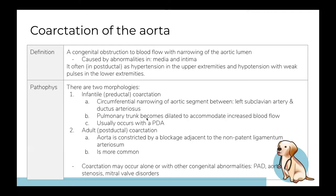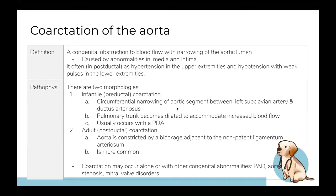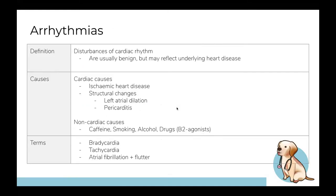Coarctation of the aorta is a congenital heart defect involving narrowing of the aortic lumen, associated with other congenital heart defects such as patent ductus arteriosus (PDA) — the small blood vessel connecting the aorta to the pulmonary artery that should close after birth. Coarctation may be asymptomatic, especially if a PDA is present. This condition is also heavily associated with Turner syndrome and is often accompanied by a bicuspid aortic valve.